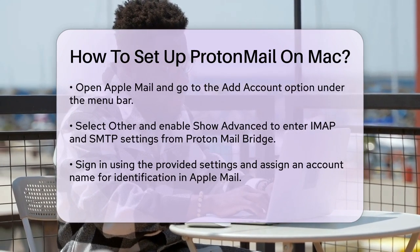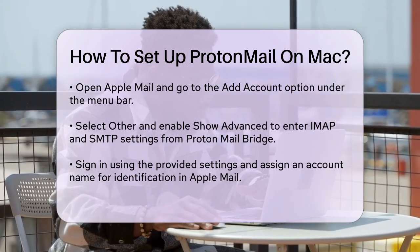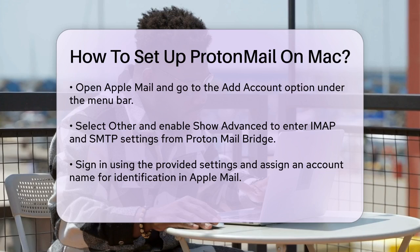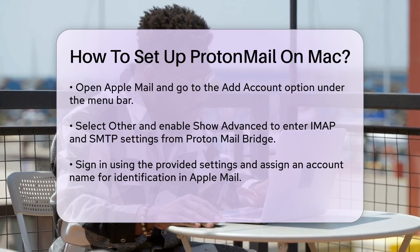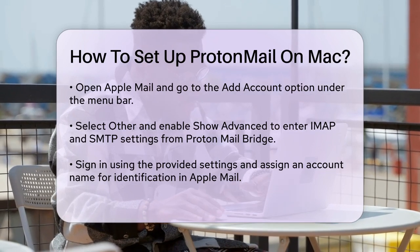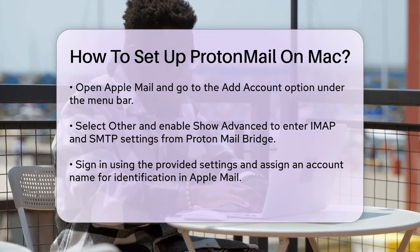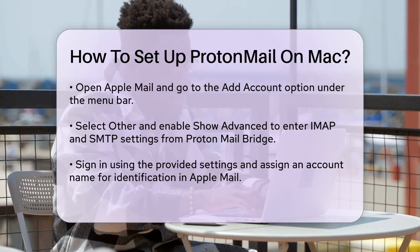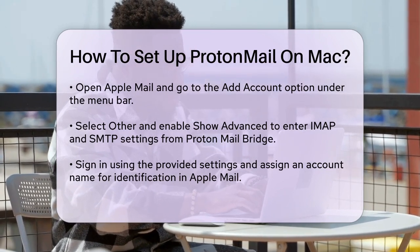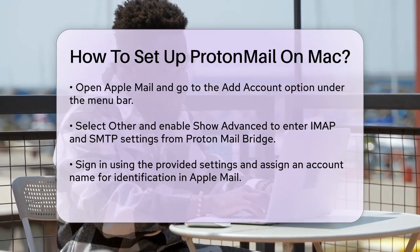Here, you'll need to enter the IMAP and SMTP settings from ProtonMail's mailbox configuration, which you can find in the ProtonMail Bridge app. Sign in with these settings, and you'll be prompted to enter an account name to identify the account in Apple Mail.